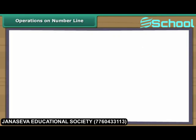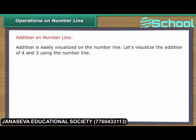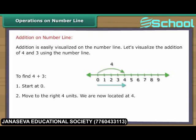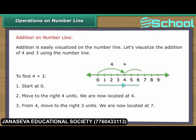Addition is easily visualized on the number line. Let's visualize the addition of four and three. To find four plus three: one, start at zero; two, move to the right four units — we are now located at four; three, from four, move to the right three units — we are now located at seven. Thus, four plus three is equal to seven.